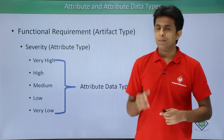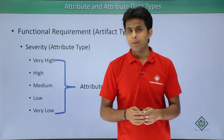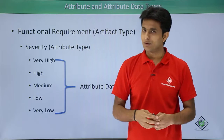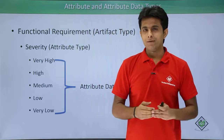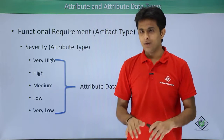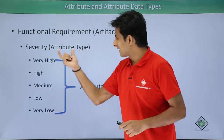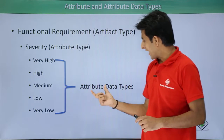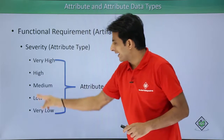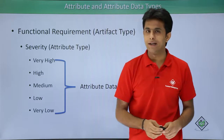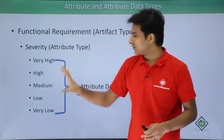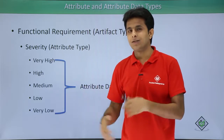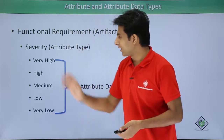In the previous video I created one artifact type that was functional requirement. For that artifact type, in this video we'll create one attribute type that is severity, and for that attribute type the data types are very high, high, medium, low, and very low. This is just an example — you can change the names and different data types.